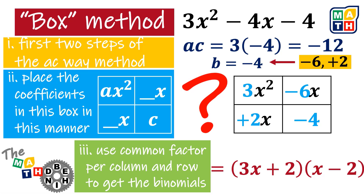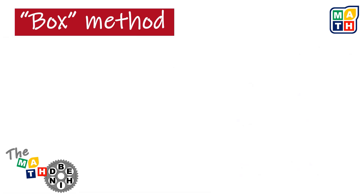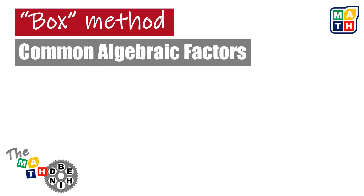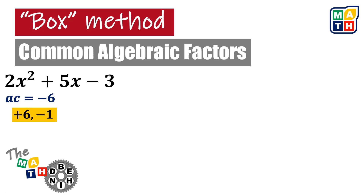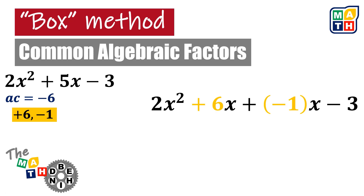But what is the math or the reason behind this box method? The reason is simply the acknowledgement of common algebraic factors. Using the first example, we know that the AC method needs positive 6 and negative 1. We are going to use these coefficients to separate the middle term, then group them into two pairs of terms.